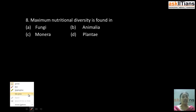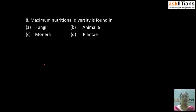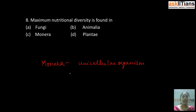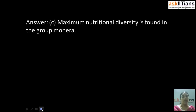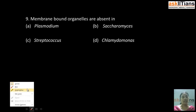The next question is: maximum nutritional diversity is found in — A) Fungi, B) Animalia, C) Monera, D) Plantae. The correct answer is C: Monera. Maximum nutritional diversity is found in Monera. Monera is a kingdom which includes unicellular organisms with prokaryotic cell organization. This prokaryotic cell organization does not have a nuclear membrane, just like bacteria. Monera also has prokaryotic cell organization.